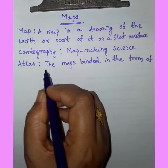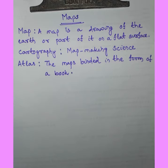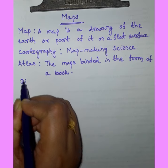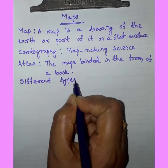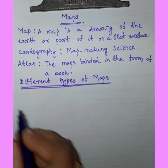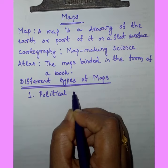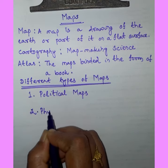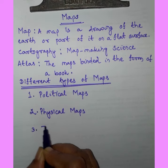There are different types of maps. They are political maps, physical maps, and thematic maps.